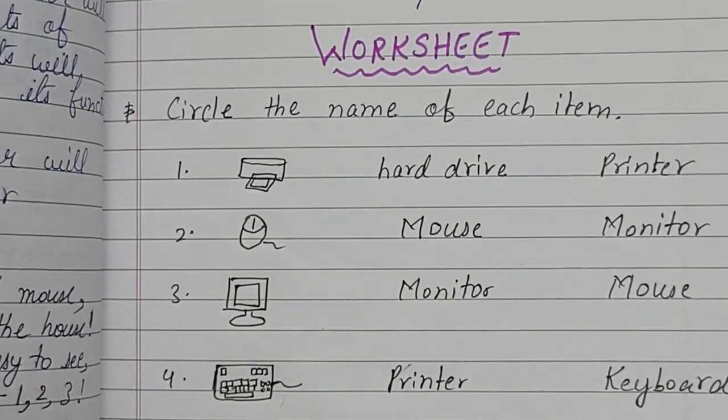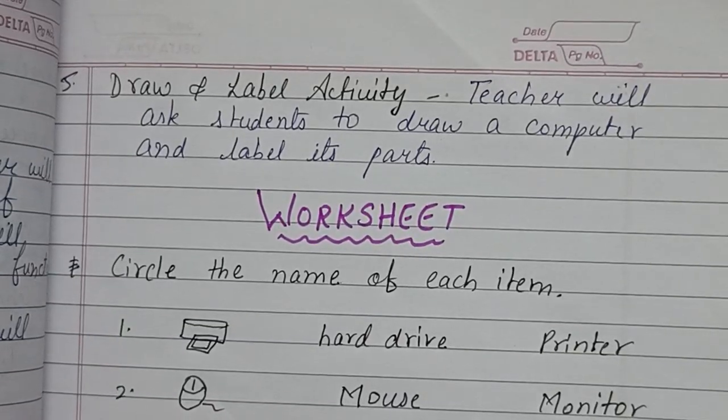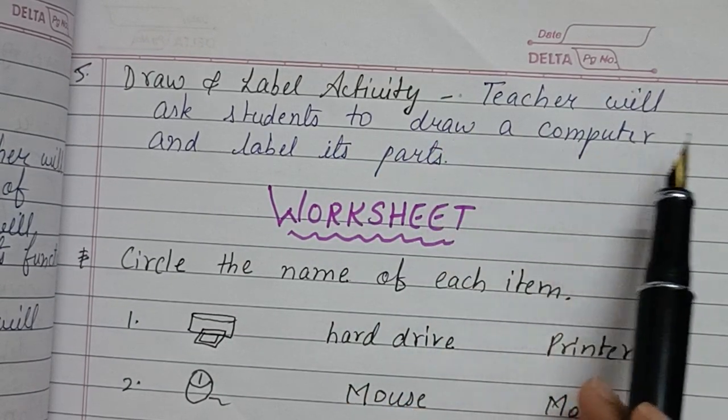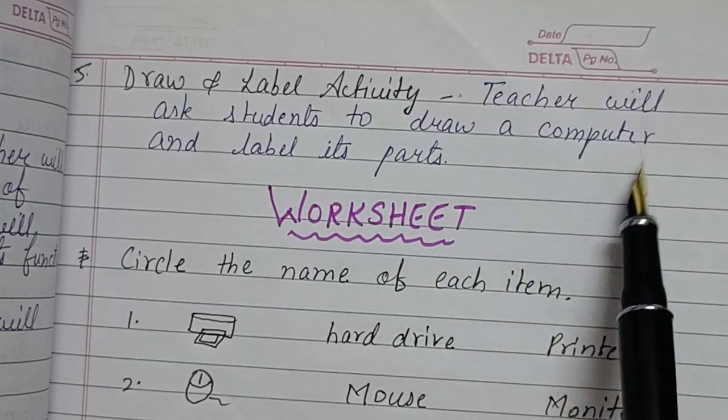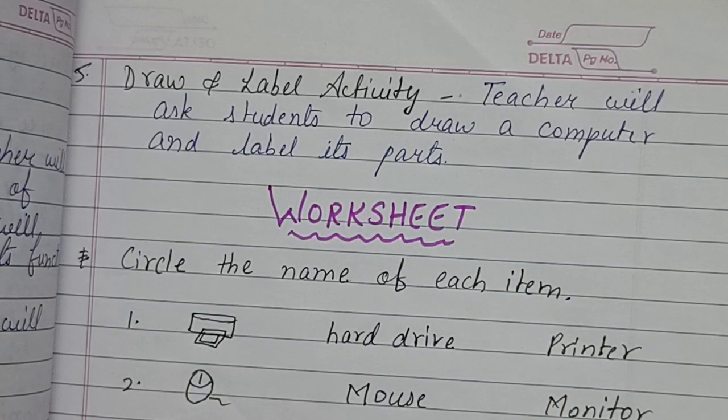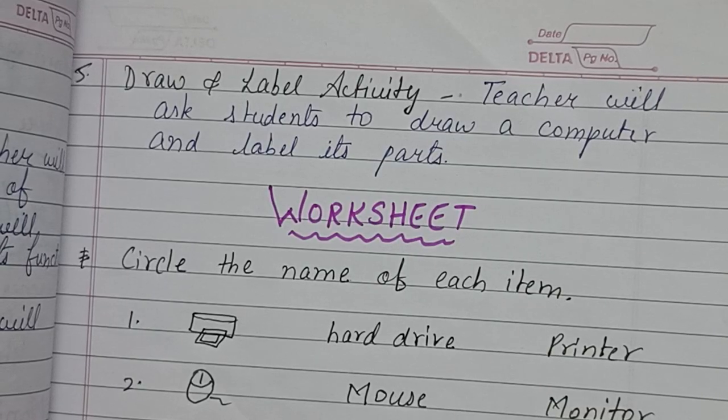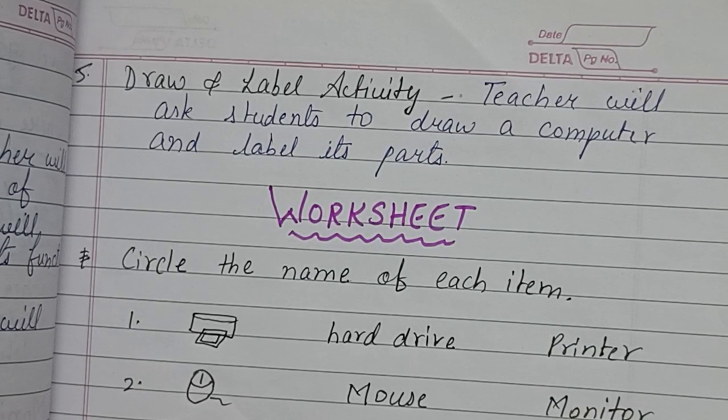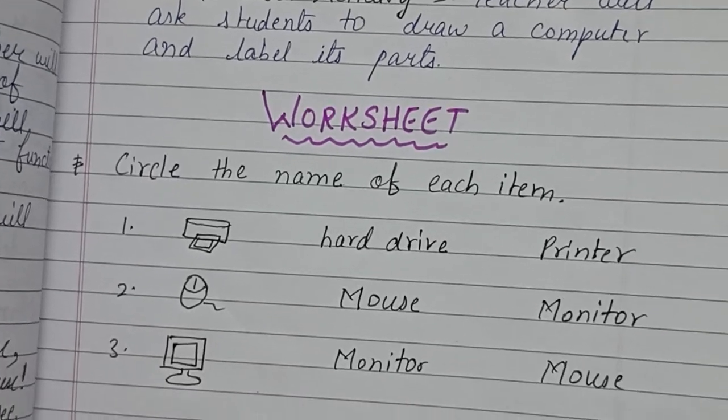Next activity is draw and label. Teacher will ask students to draw a computer and label its parts. This activity students can do in their notebook or a page can be provided to them.